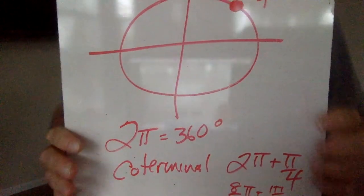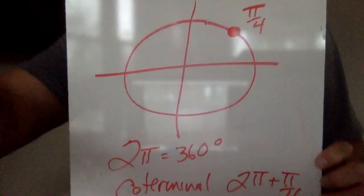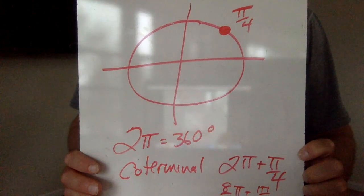On your radians, it's the same thing. Here is pi over 4.